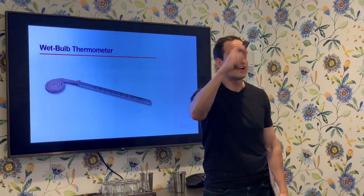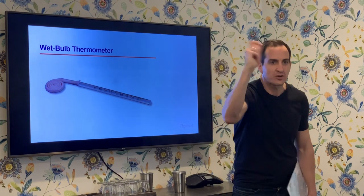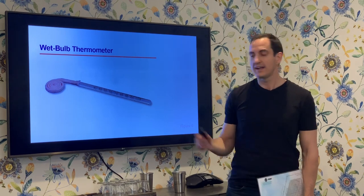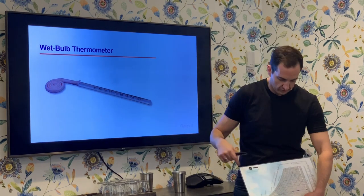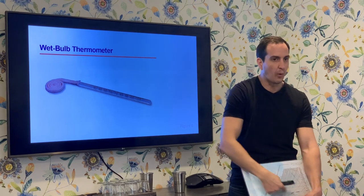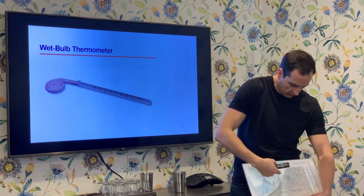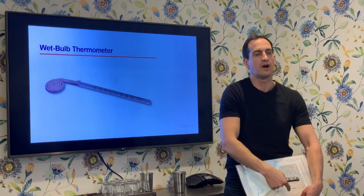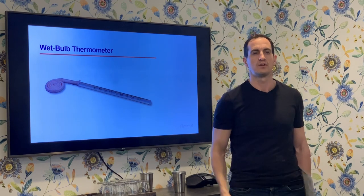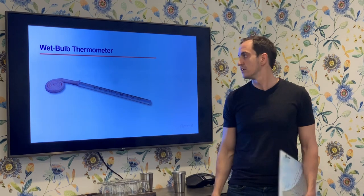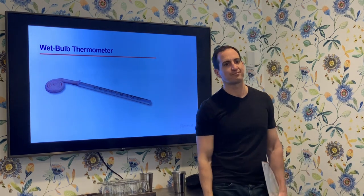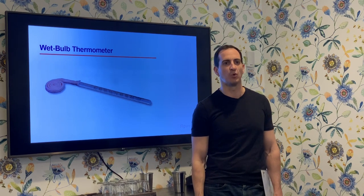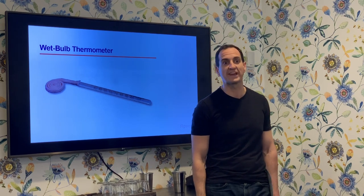To measure the wet bulb temperature, I take this wet sock and sling it around inside the room I'm trying to measure. The temperature I read will give us the second point along the wet bulb lines. Between the two points I now know where we are on the chart. That is because of the evaporative cooling effect of water — the same reason that we sweat when we get hot, and the same reason that plants transpire when exposed to radiation.